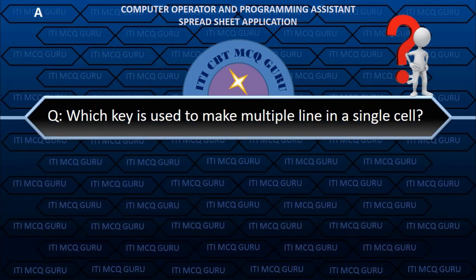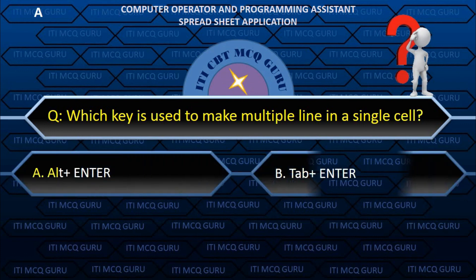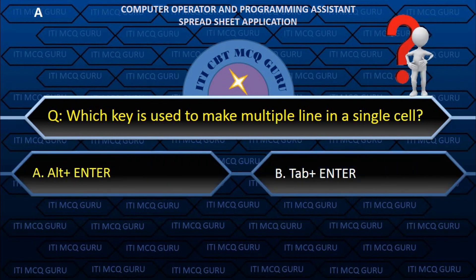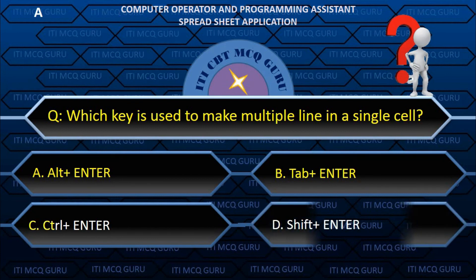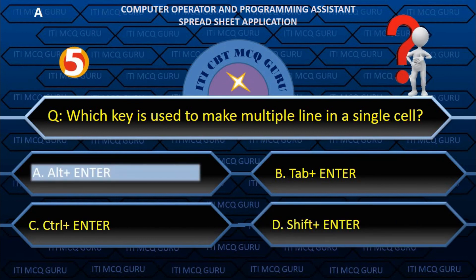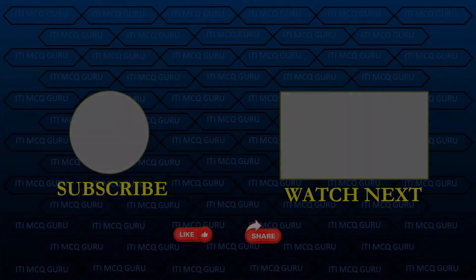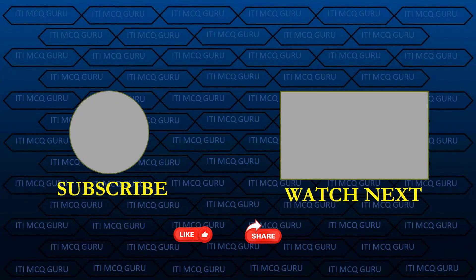Which key is used to make multiple lines in a single cell? A. Alt + Enter.